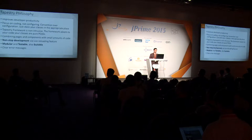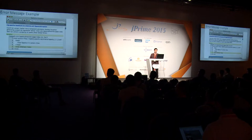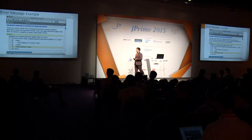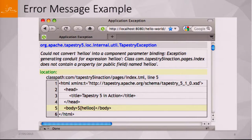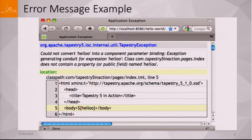Another thing is that they have clear error and exception messages. For example, you can see it's pretty obvious when we don't have a specific property. So they tried to make it really developer-centric.